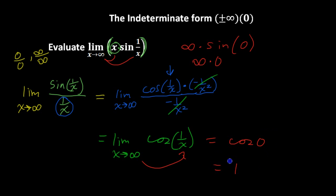That is the answer. The limit of x times the sine of 1 over x, as x approaches infinity, is 1.